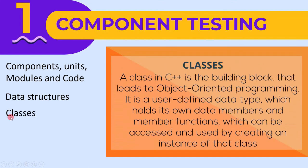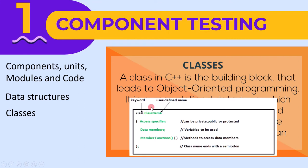The third test object is classes. A class in C++ is the building block that leads to object-oriented programming. It is a user-defined data type which holds its own data members and member functions, which can be accessed and used by creating an instance of that class. This example shows a class with a keyword, user-defined name, and a body consisting of data members and member functions. In component testing, we can test these data members by changing their values and each of the member functions.